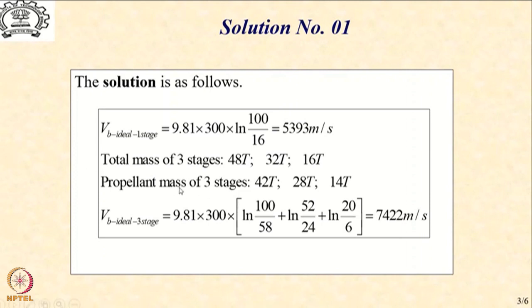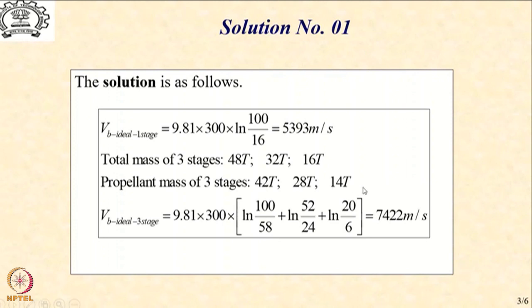The 84 tons of propellant can also be distributed in the three stages as follows: the first stage will carry 42 tons, the second stage will carry 28 tons, and the third stage will carry 14 tons. We can see that all these add up to 84 tons and are in the ratio of 3 to 1.